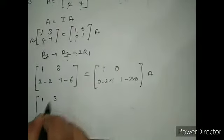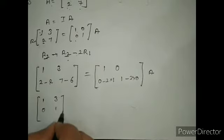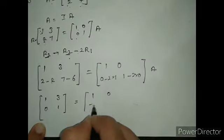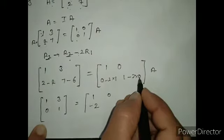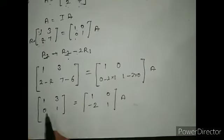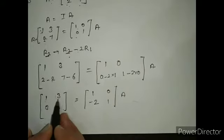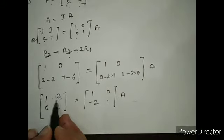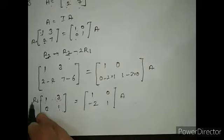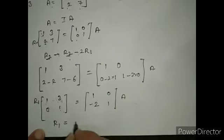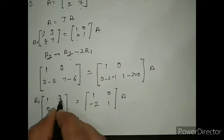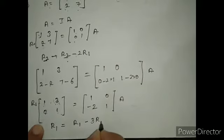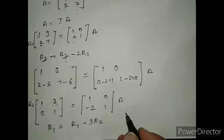यह जो value आई: [1, 3; 0, 1] and [1, 0; minus 2, 1]. अब यहाँ पर सिर्फ 3 को 0 बनाना है। Column में भी कर सकते हैं और row में भी — row में ही change करो। R1 में change करना है। देखो 3 में से 3 minus हो जाएंगे तो 0 हो जाएगा, तो R1 minus 3R2 apply करते हैं।